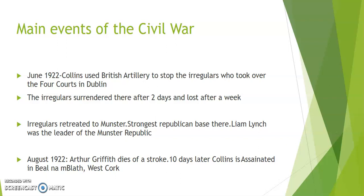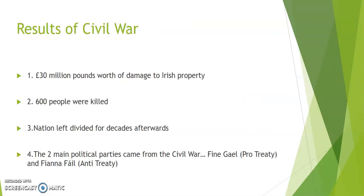Ten days later, on the 22nd of August, Michael Collins was killed in an ambush at Béal na Bláth, West Cork. William T. Cosgrave now became the leader of the Dáil. He appointed Kevin O'Higgins as the man in charge of law and order, and O'Higgins passed a special powers act that allowed them to execute Irregulars for offences such as having a gun. De Valera tried to get the Irregulars to stop fighting as he saw there was no hope for them, and in May 1923 the Irregulars agreed to a ceasefire.